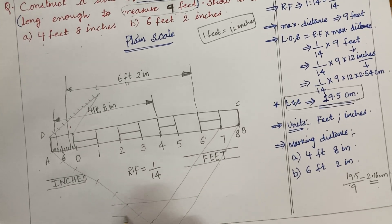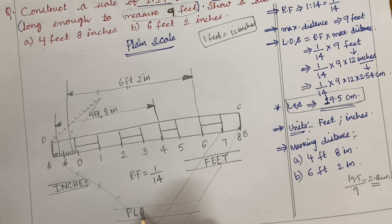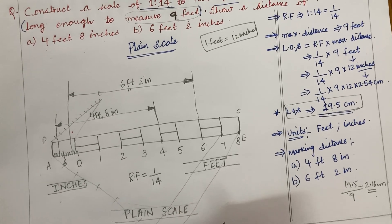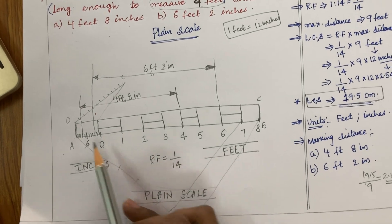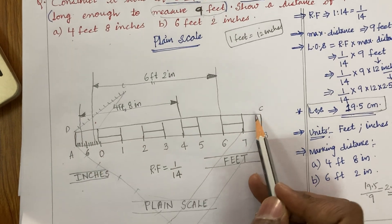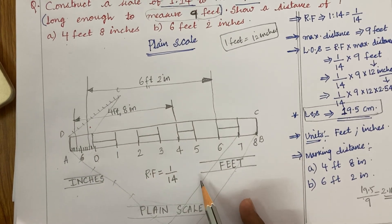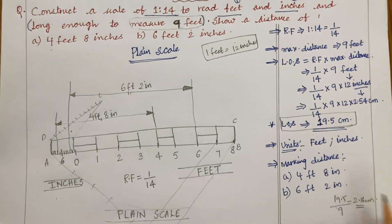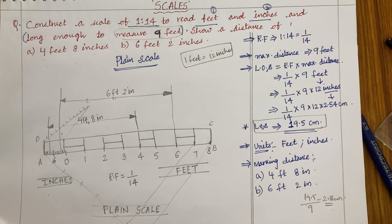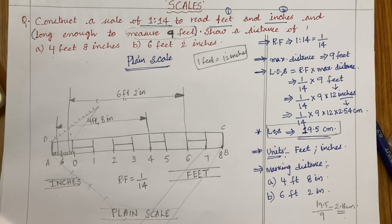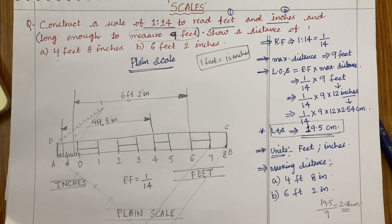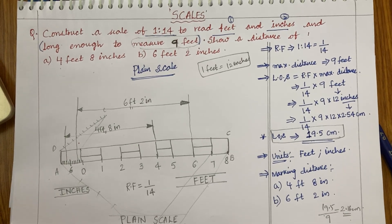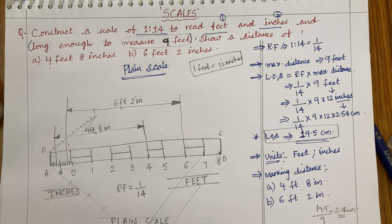Do not forget to write 'plain scale' exactly below this scale in neat handwriting. Every point earns marks — this is a 15-mark problem. Do not forget to write the numbers and letters in neat handwriting. The scale must be worked with HB pencil, numbers and letters with HB pencil, and dimension lines with H pencil. Do not forget to calculate everything in your booklet. Hope you are liking my videos. Please subscribe to my channel, share with your friends, and comment if you need any other problems related to engineering graphics. Good luck and God bless.